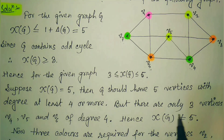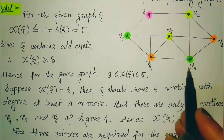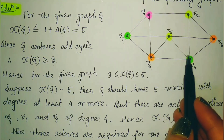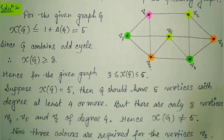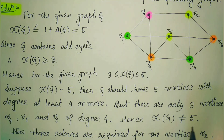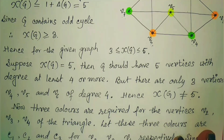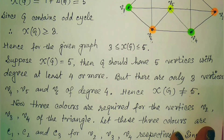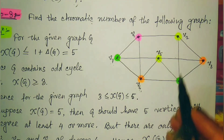However, there are exactly three vertices — v4, v5, and v6 — of degree 4. Since we need 5 such vertices but only have 3, the chromatic number is definitely not equal to 5. Three colors are required for the triangle vertices v2, v3, v4, so we assign three distinct colors to those.